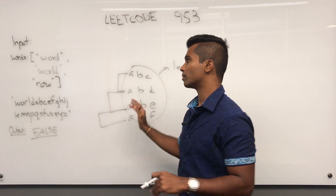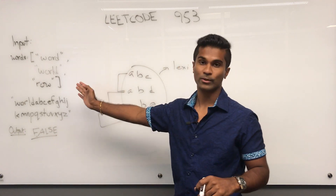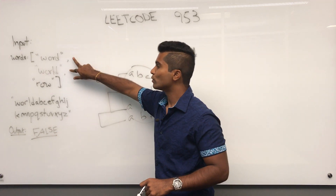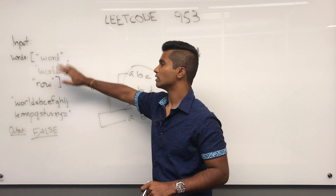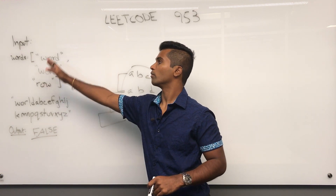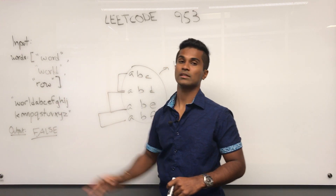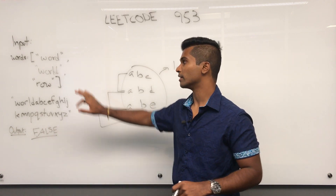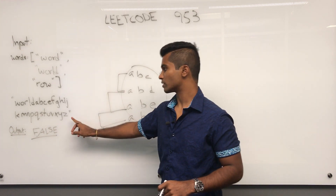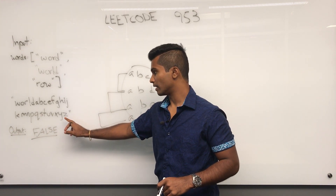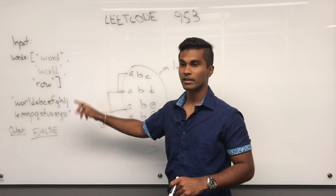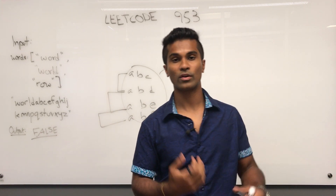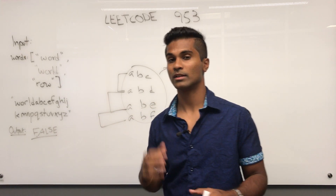That's called the transitive property, and we apply the same principle to this question: if these two are in order and then these two are in order, then the whole list is in order. In this case it's false, meaning these are not in order, because the letters in the alien language have a different priority or ordering than ours.